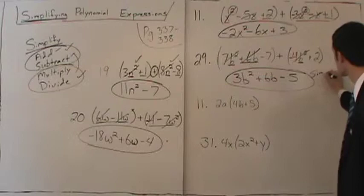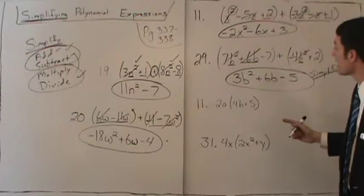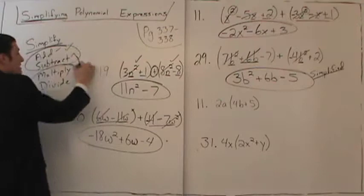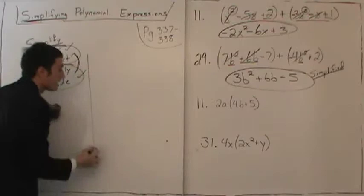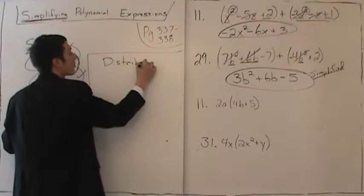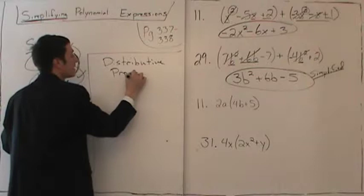Now that we've looked at addition and subtraction independently, let's look at where these two relate. We're going to look at multiplication and addition coming together, and there's one property that is the key to unlocking the mysteries of this class — the key to making algebra make sense.